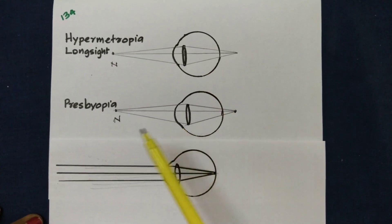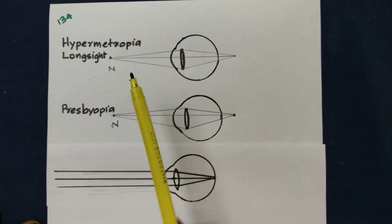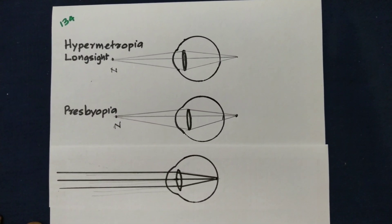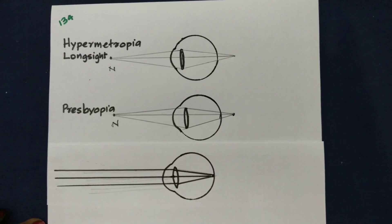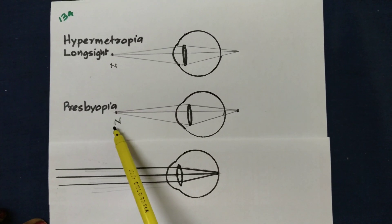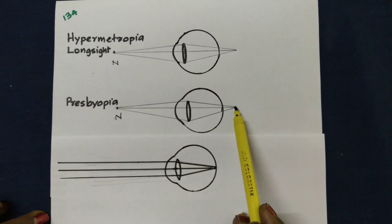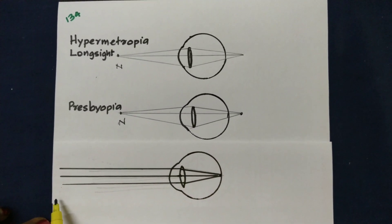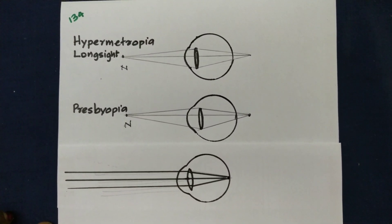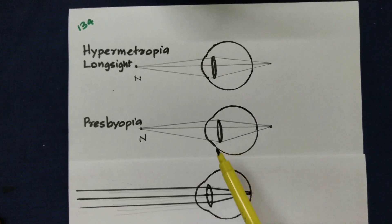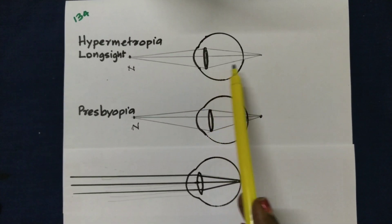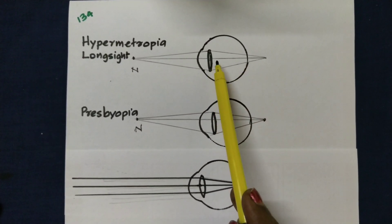I am going to compare this to presbyopia. If the image is formed behind the retina, we have to clear the image. The focal length is very long. This is a lens — the focal length is very long.